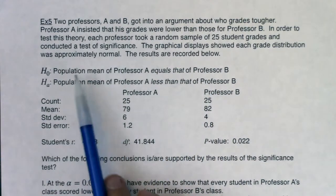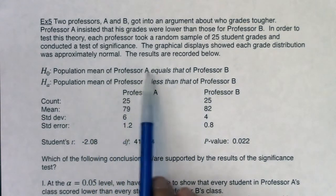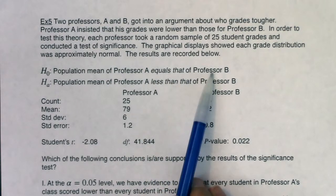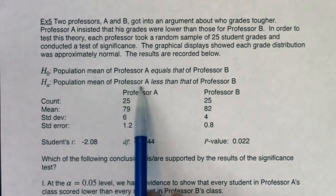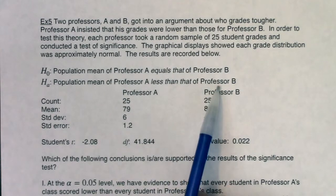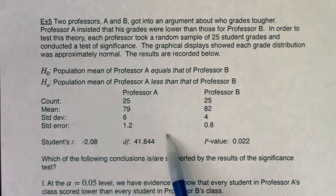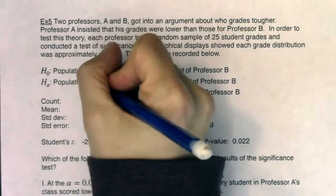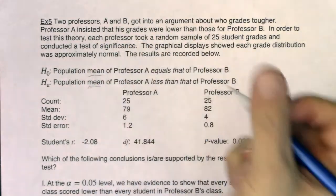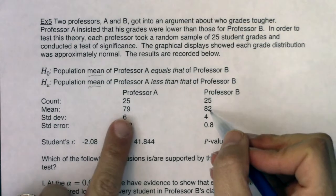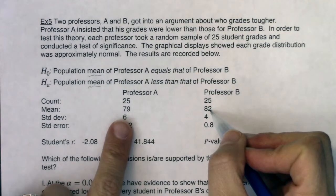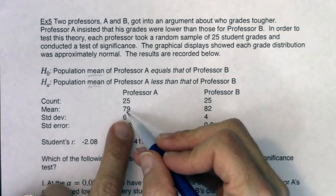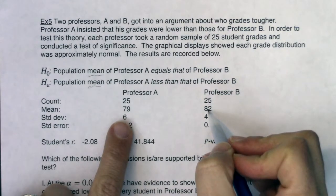All right, we have the null. The population mean of Professor A equals that of Professor B against the alternate that the population mean of Professor A is less than that of Professor B. And it looks like there's a bunch of statistics here. Okay, so first of all I see the word mean popping up everywhere and it looks like they're talking about grades. So I'm going to assume that some kind of grade out of a hundred percent.